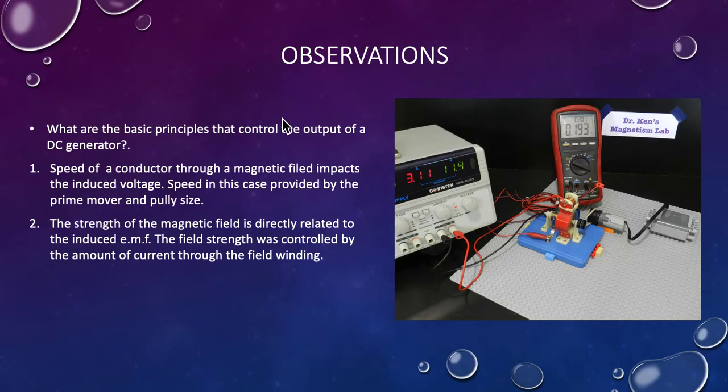What are our observations from this? What are the basic principles to control the output of a DC generator? One, the speed of the conductor through the magnetic field impacts the induced voltage. Speed in this case provided by our prime mover, our pulley size changes changed the output of our generator. Two, the strength of the magnetic field is directly related to the induced EMF. The field strength was controlled by the amount of current through our field winding. The more current, the more magnetic field, the more magnetic field, the higher the generator's output.